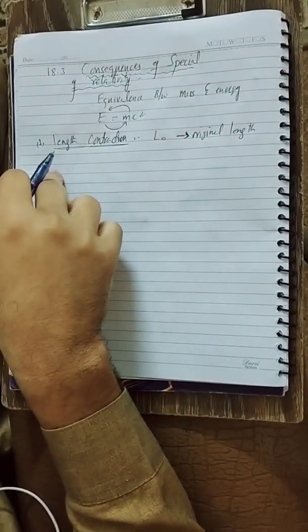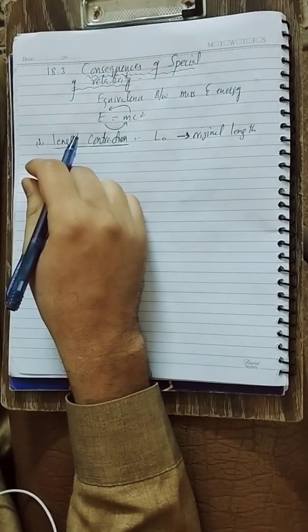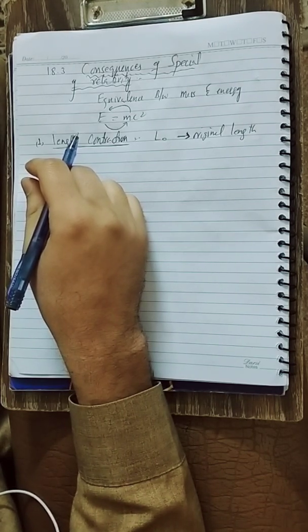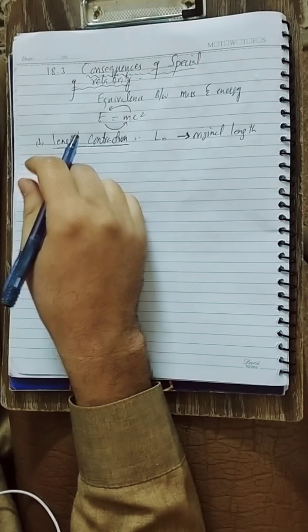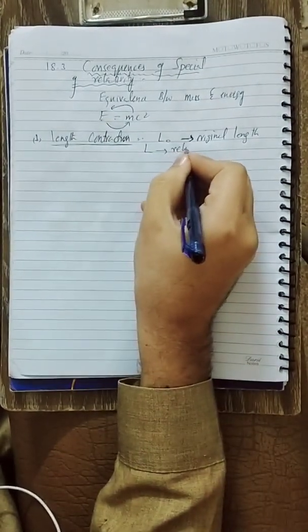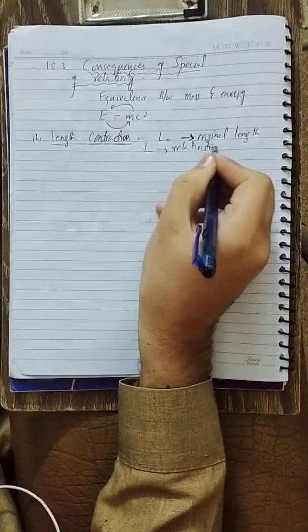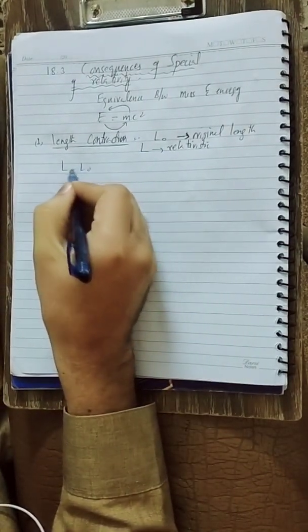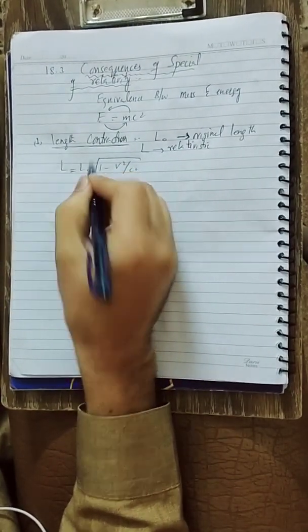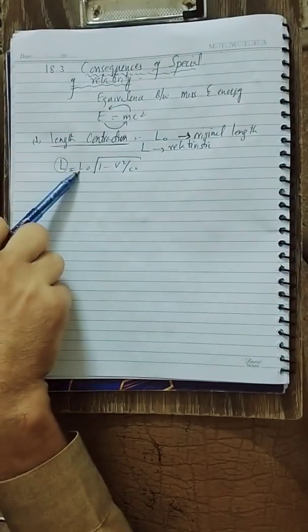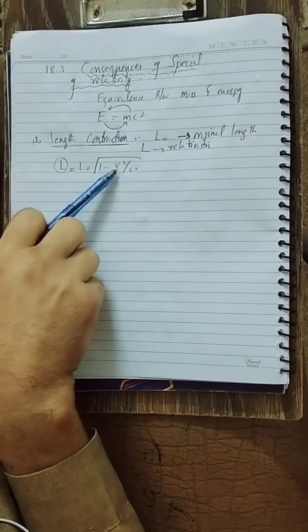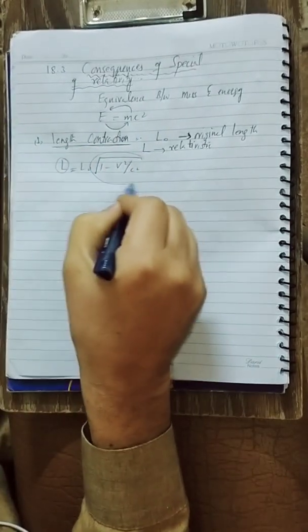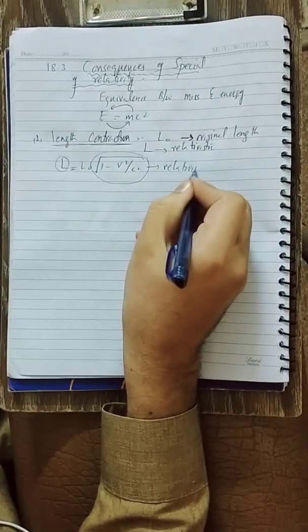If a rod of length L is moving, the length we calculate is called L — the relativistic length, or observed length — when the object or the observer is in motion. The formula for length contraction is: L = L₀ √(1 − v²/c²). Here, L₀ is the proper length, v is the speed of the object, c is the speed of light, and the square root term is called the relativistic factor.